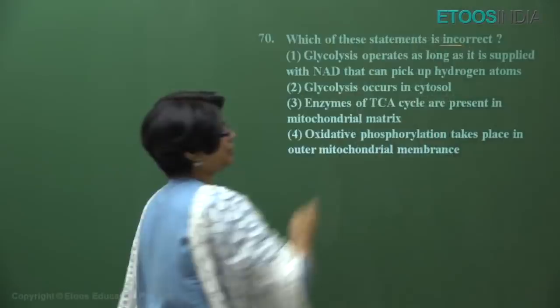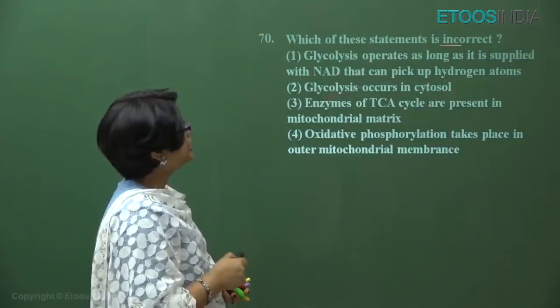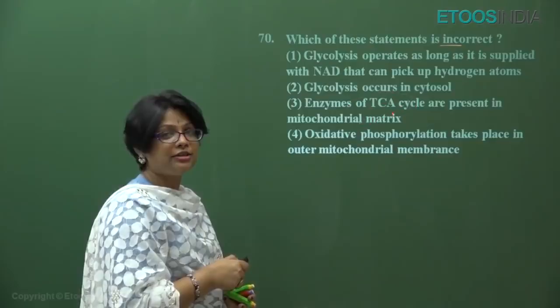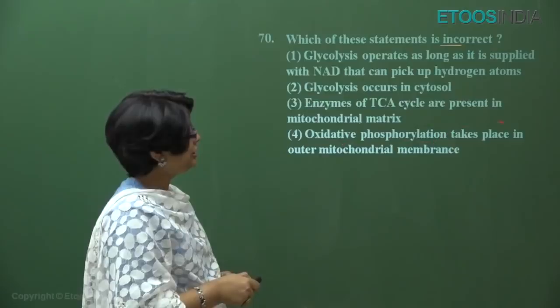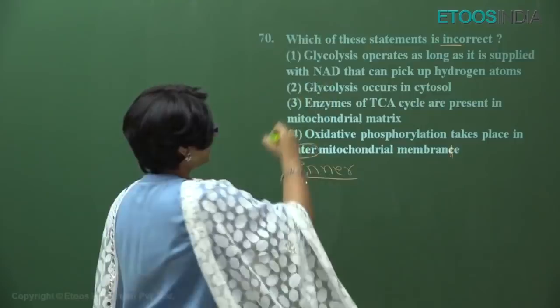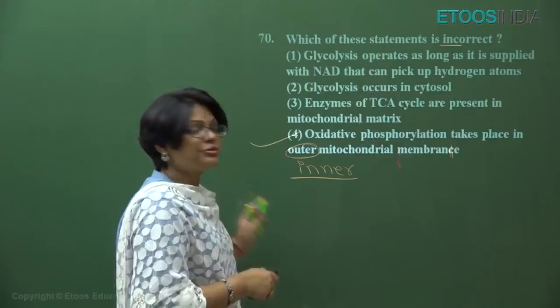Question number 70: select the incorrect statement. Glycolysis operates as long as supplied with NAD to pick up hydrogen atoms — true. Glycolysis occurs in the cytosol — yes. Enzymes of Krebs cycle are present in mitochondrial matrix — yes, except succinate dehydrogenase on the inner mitochondrial membrane. However, the option states oxidative phosphorylation takes place in the outer mitochondrial membrane — this is wrong. It takes place on the inner mitochondrial membrane. Answer is four.